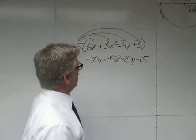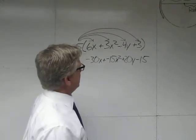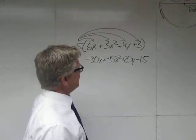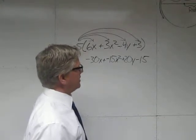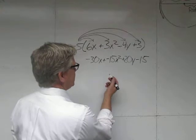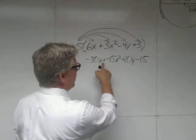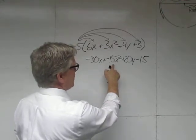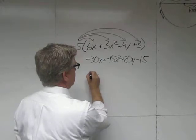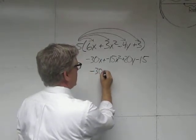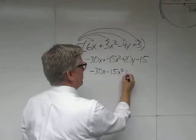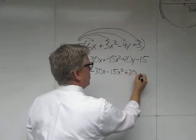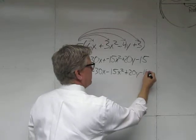So now we're down to this. We have negative 30x plus a negative 15x squared plus 20y minus 15. We can go like this. Just to make it a little easier, if we're adding a negative number, it's the same as subtracting a number. So let's just go like this. Negative 30x minus 15x squared plus 20y minus 15.